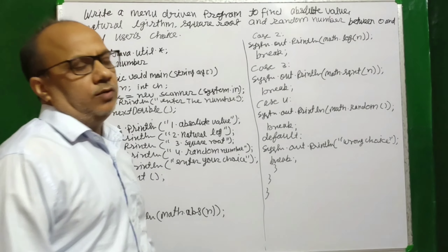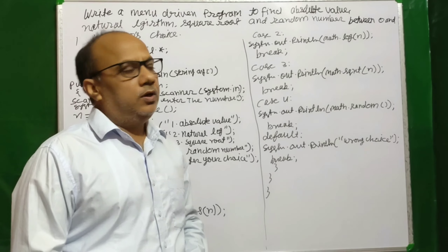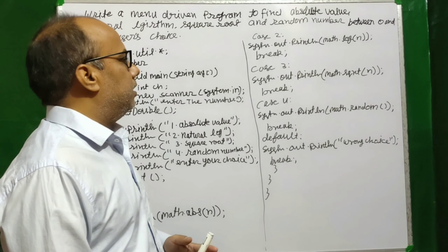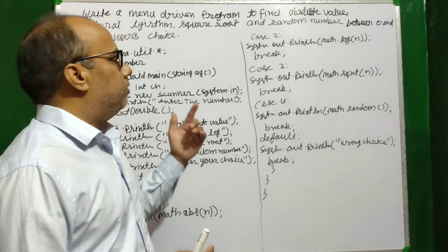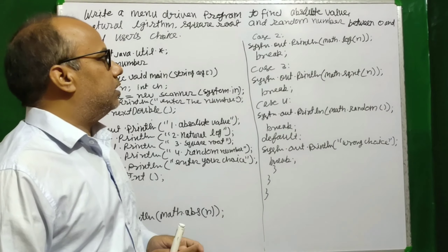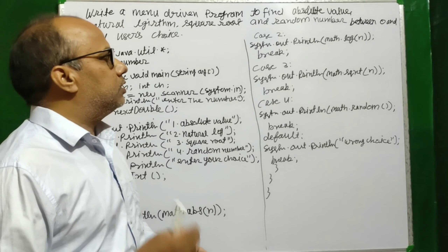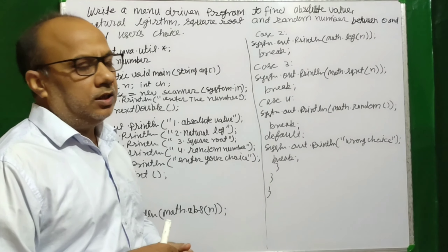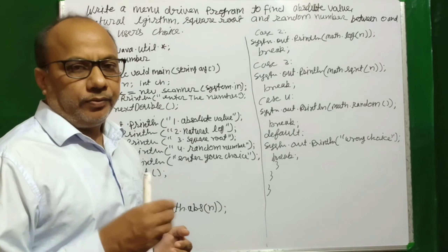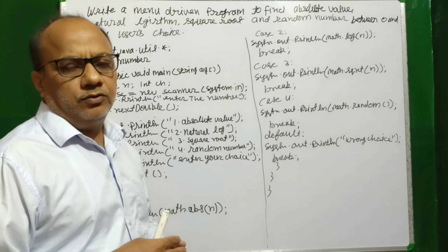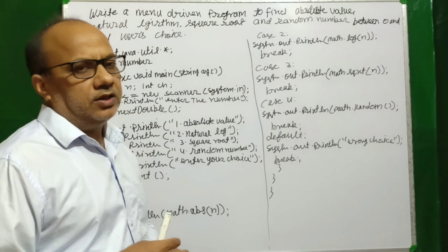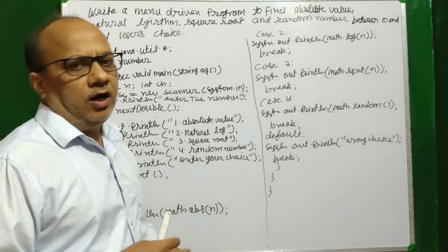Based on user's choice, you can process this. If the user chooses absolute value, then it processes that; if natural logarithm, that operation runs. So natural logarithm should be among 4 operations available.